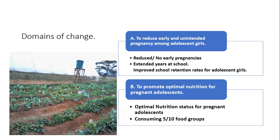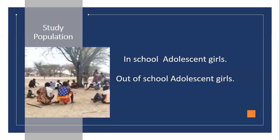We looked at domains of change — the kind of change we were expecting to find in the girls' lives. Under the first objective of reducing early and unintended pregnancies, we hoped to see a reduction in pregnancies, extended years at school, and improved school retention. Under the second objective on optimal nutrition, we hoped to see optimal nutrition status for pregnant adolescents and girls consuming at least five of the ten food groups.